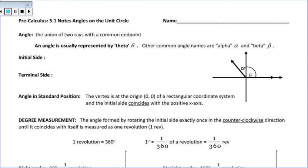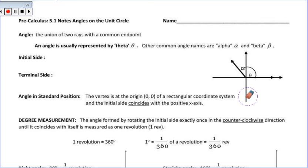Today we're going to start Unit 5, beginning with angles and the unit circle. The unit circle is basically a circle where the coordinates would be like 1, 0 and 0, 1 — we're just hitting all the 1's going around the circle. That's a general idea of what it is.